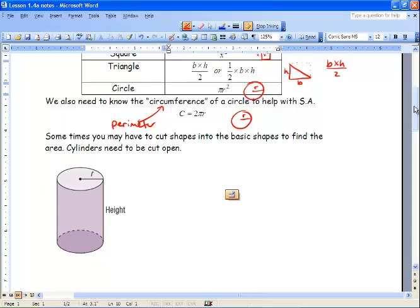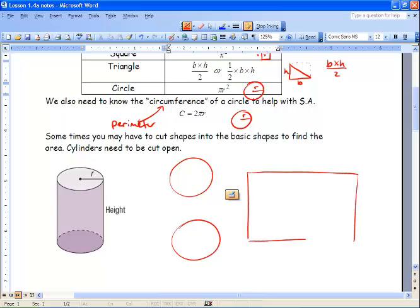Now, sometimes we have to cut shapes up into their basic shapes areas to find the actual area. So a cylinder is an example of what we need to do to cut them up. So with a cylinder, we have two circles, the top and the bottom. And just like we talked about a toilet paper roll, we would roll out the sides.